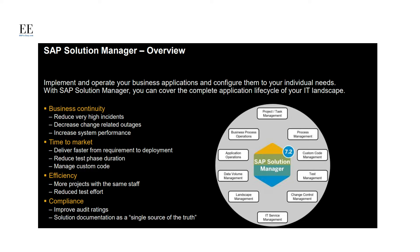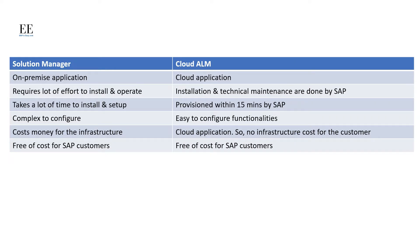ALM software provides tools that help manage all these different phases — in other words, it is software used to manage the development and operation of other software. SAP Solution Manager was the famous ALM tool offered by SAP to its customers. It is free of cost and has functionalities like application operations, business process operations, integration management, data value management, test management, project management, IT service management, and much more. However, the problem with Solution Manager was that it became very complex to configure and maintain.